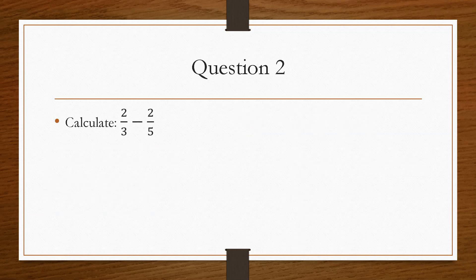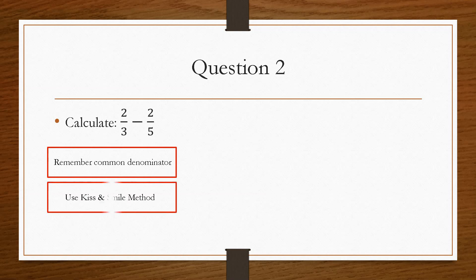So then if we take a look at question number two. Question number two asks us, 2 over 3 take away 2 over 5. Now, again, because we're subtracting, we must get a common denominator on the bottom. So same as question one, we'll use the Kiss and Smile method. And again, cross multiply and then times the two numbers on the bottom.